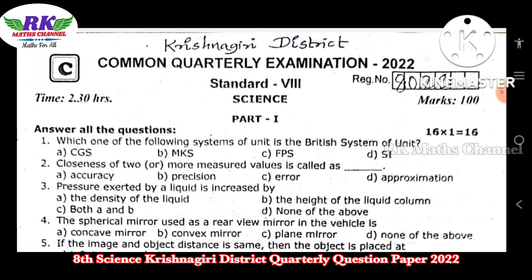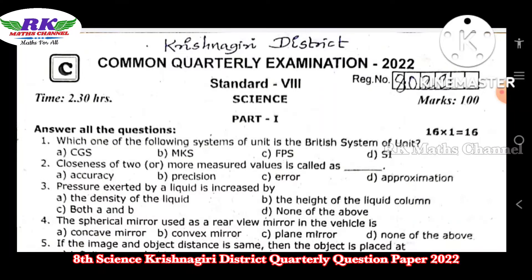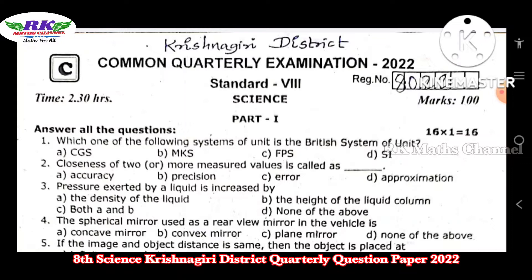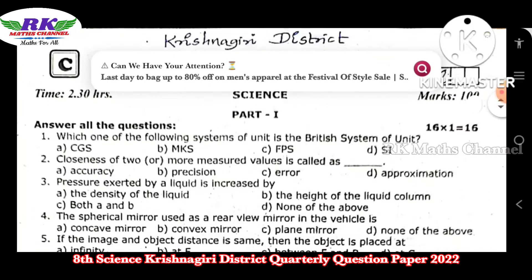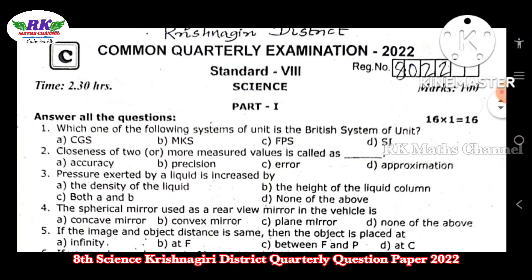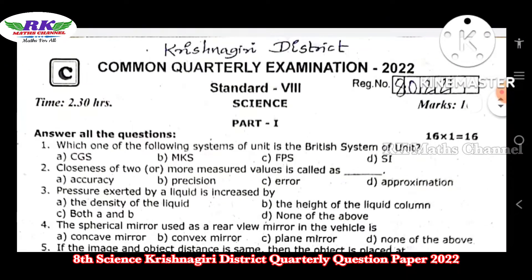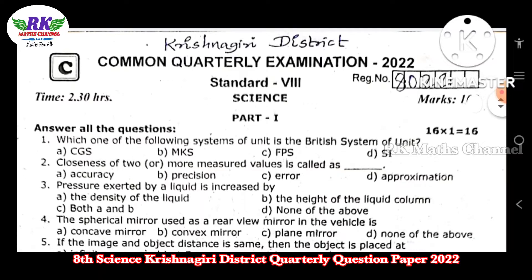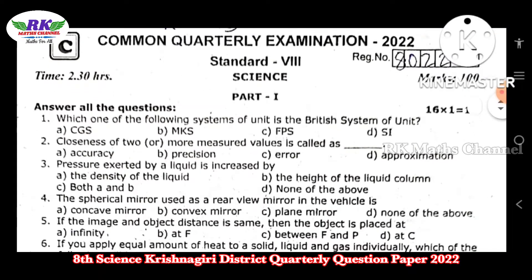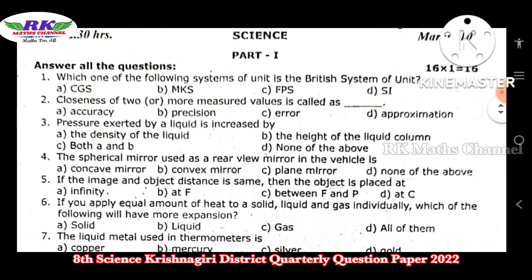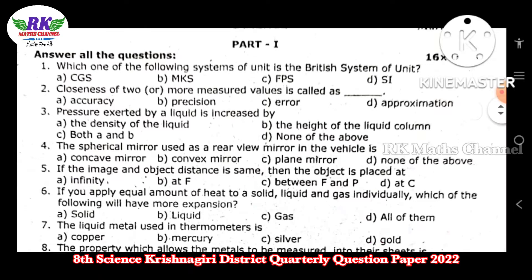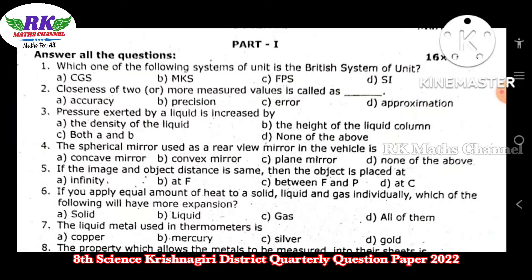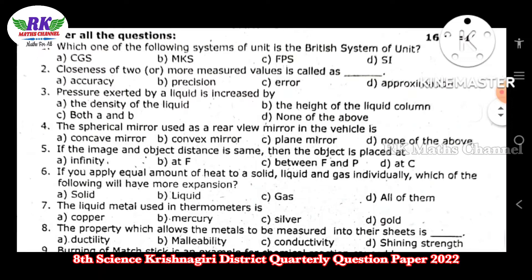Here I have a question paper from the Krishna district. Total marks are 100. The question paper pattern is as follows. There is a PDF link in the description — you can use it and download it. Part 1 has a total of 16 bits.